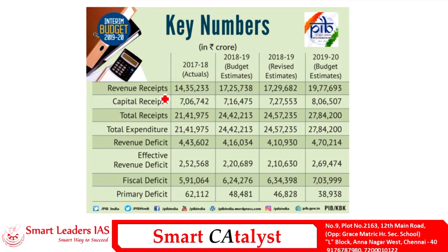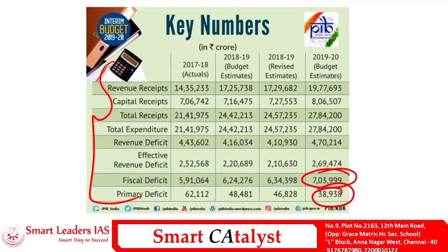These are the key numbers in actual figures in crores for the various deficit components. The fiscal deficit is the largest, standing at about seven lakh crores. Excluding interest payments, it reduces significantly to the primary deficit, which stands at about 38,000 crores. The revenue deficit stands at about four lakh seventy thousand crores, and the effective revenue deficit stands at about two lakh sixty thousand crores — approximately half of the revenue deficit.